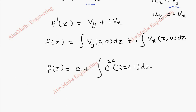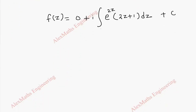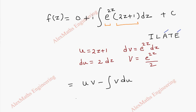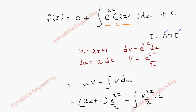We now integrate i times integral of e^(2z)(2z+1) dz using integration by parts, since we have a product of algebraic and exponential terms. We choose u = (2z+1) and dv = e^(2z) dz. Then du = 2 dz and v = e^(2z)/2. Applying the formula u·v minus integral v du gives: (2z+1)·e^(2z)/2 minus integral of e^(2z)/2 times 2 dz.